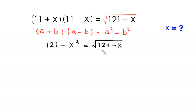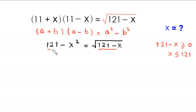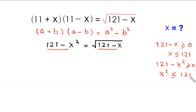Now, 121 minus x must be greater than or equal to 0, which implies x must be less than or equal to 121. Also, 121 minus x squared must be greater than or equal to 0, so x squared must be less than or equal to 121, meaning x must be between negative 11 and 11 inclusive. Combining these gives the domain of the equation.